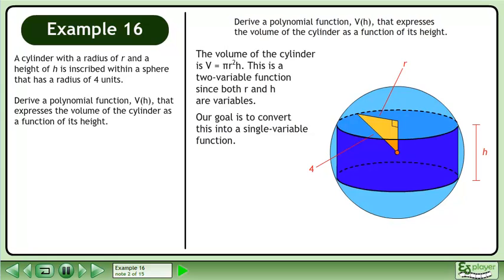The volume of the cylinder is V equals π r squared h. This is a two-variable function since both r and h are variables. Our goal is to convert this into a single variable function.